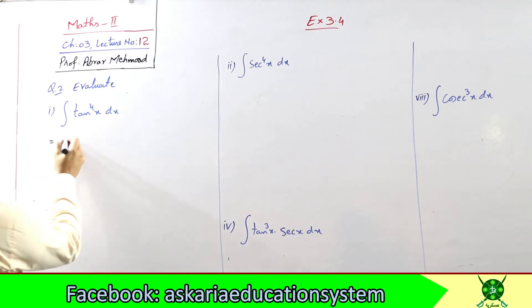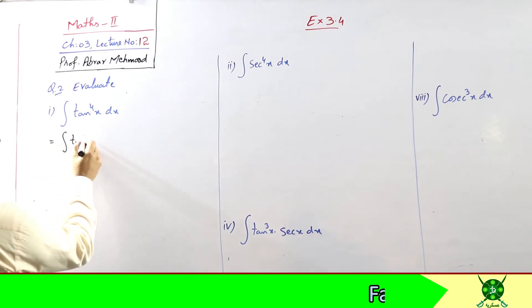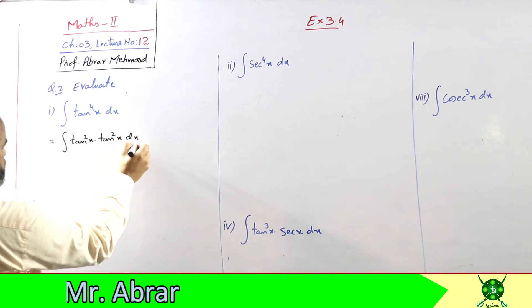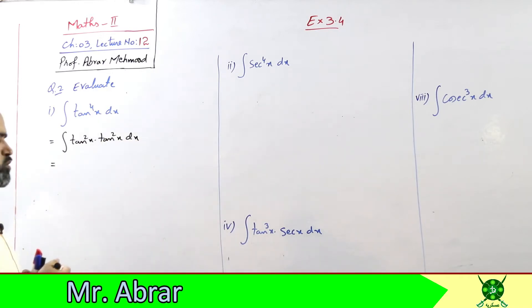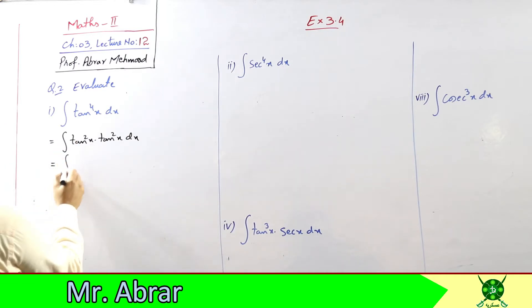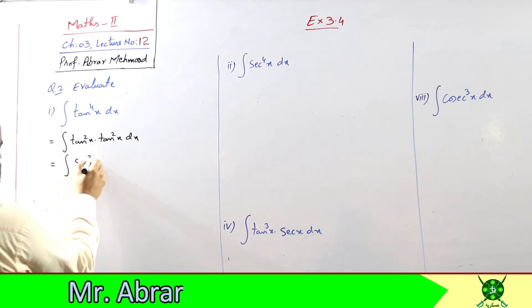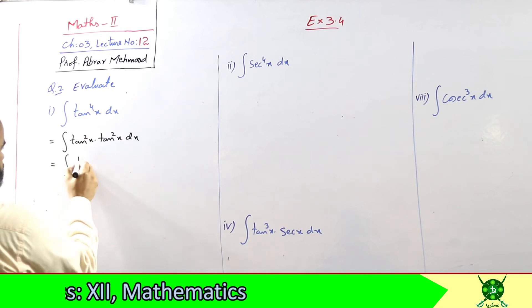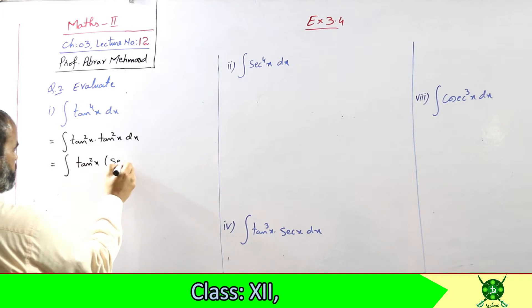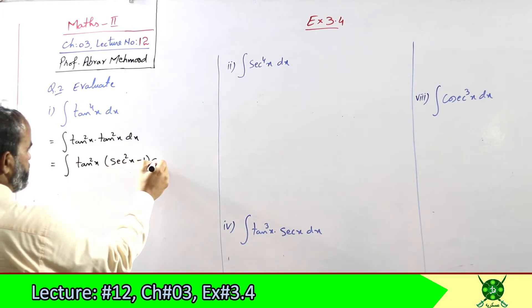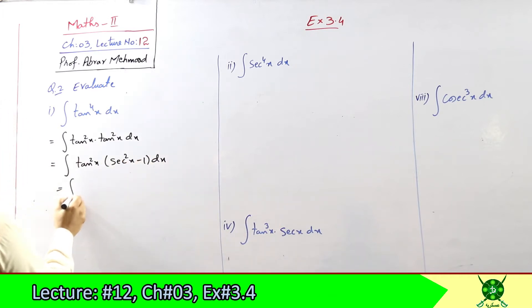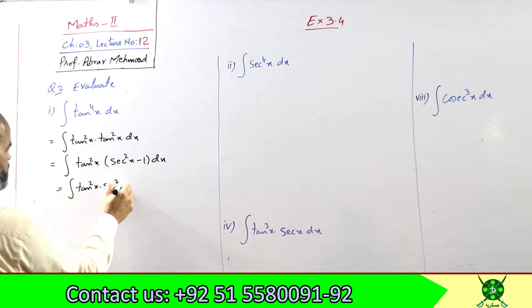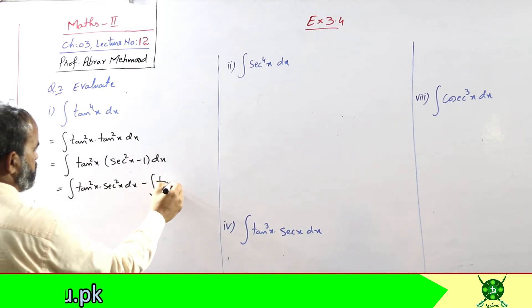पहला part है integral tan⁴(x)। सबसे पहले इसको break कर दें tan²(x) into tan²(x) की form में। आपको पता है कि tan²(x) किसी भी function का derivative नहीं होता, तो एक function को change कर रहा हूँ। second वाले को sec²(x) minus 1 में बदलता हूँ। जब multiply करूँगा तो आजाएगा tan²(x)·sec²(x) dx और minus 1 को tan²(x) से multiply करेंगे।